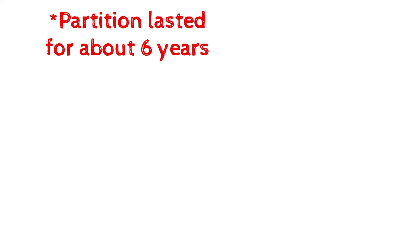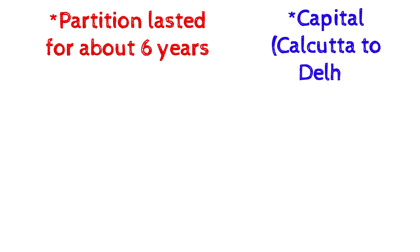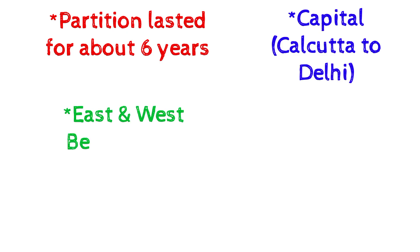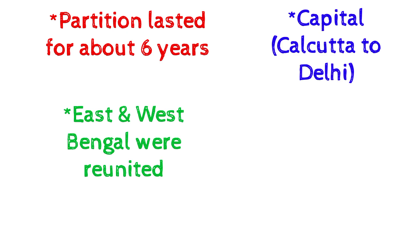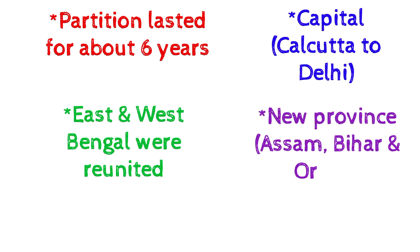The capital was shifted from Calcutta to Delhi. East and West Bengal were reunited, and Assam, Bihar, and Orissa were separated to form a new province.